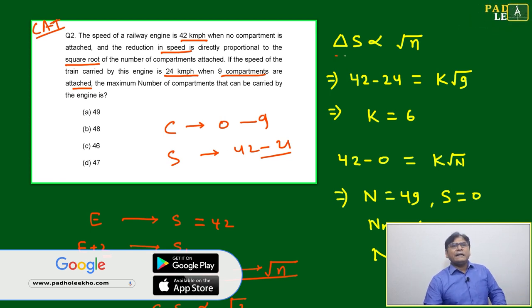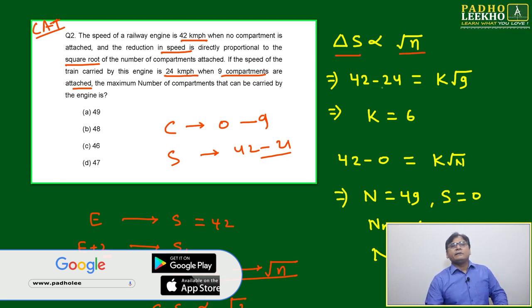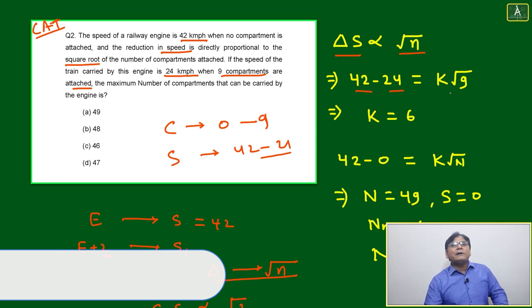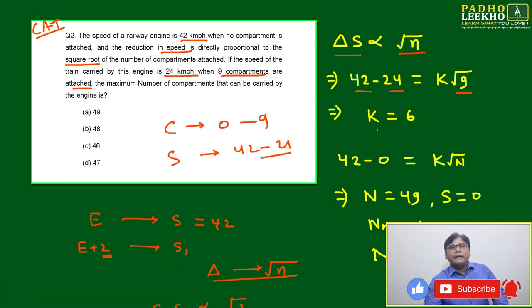Here we can directly write: delta S is directly proportional to root n. 42 minus 24, that equals k times root 9. The square root of 9 gives k equal to 6. In this type of question, first find the proportionality constant.